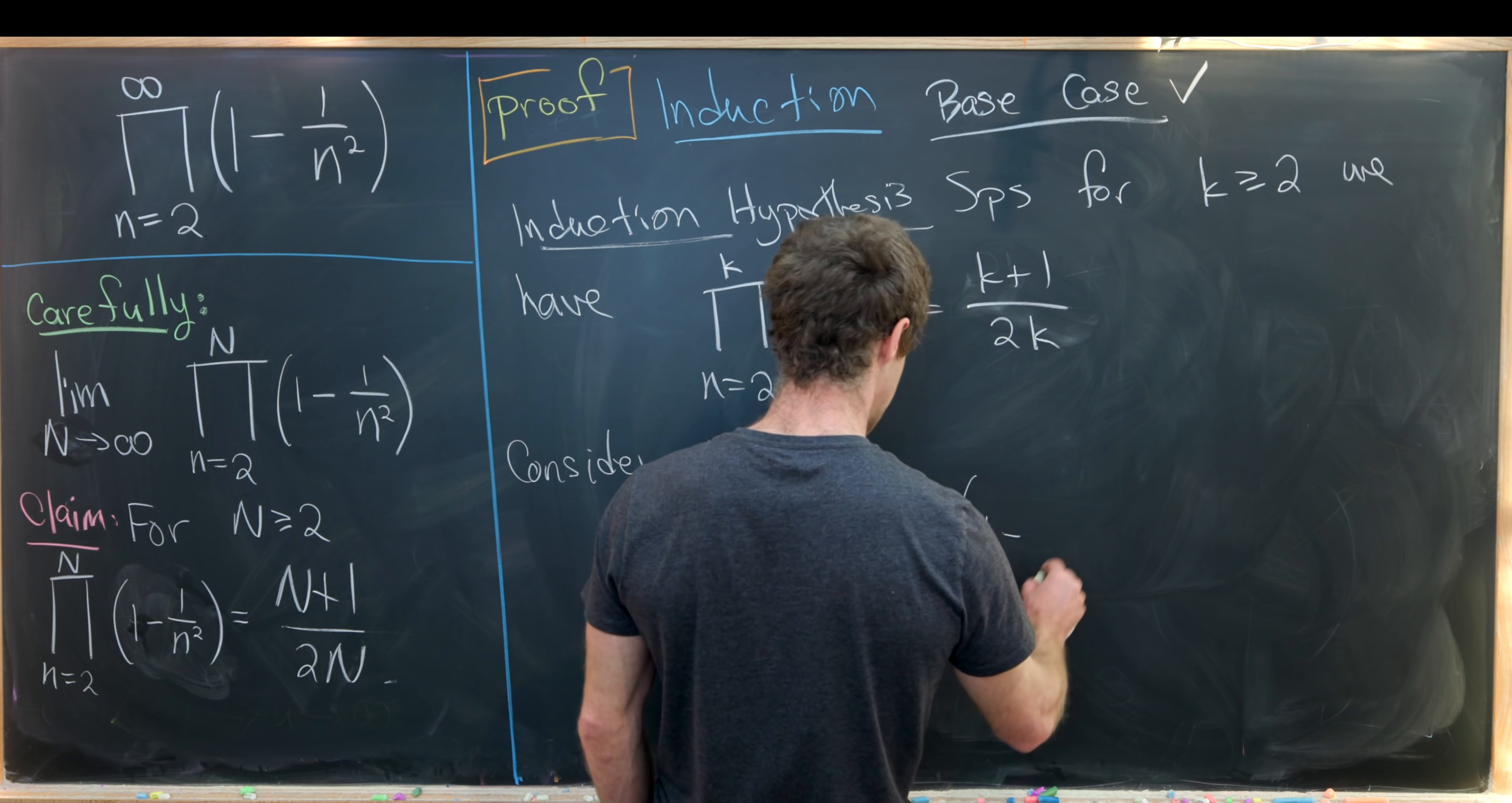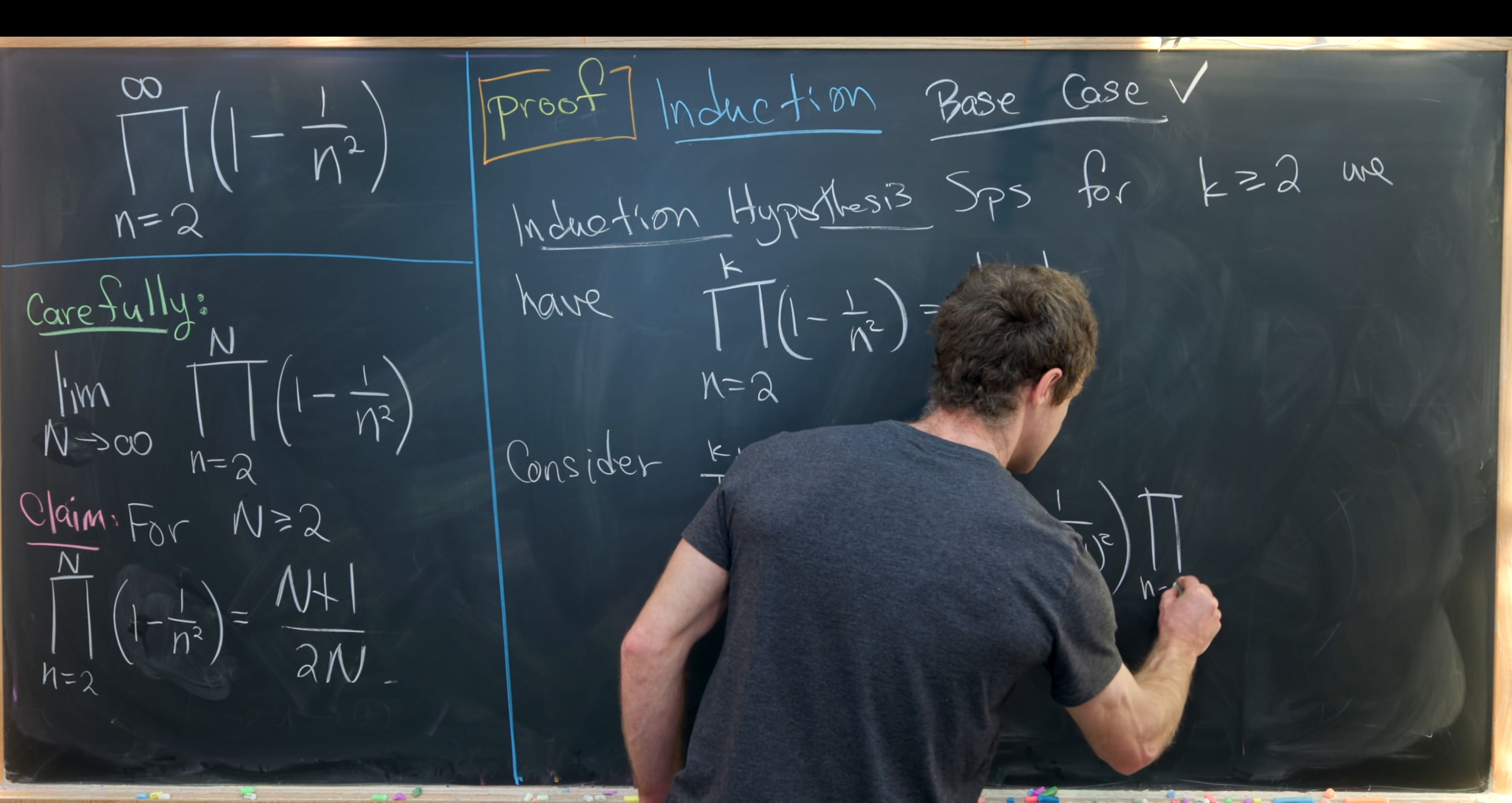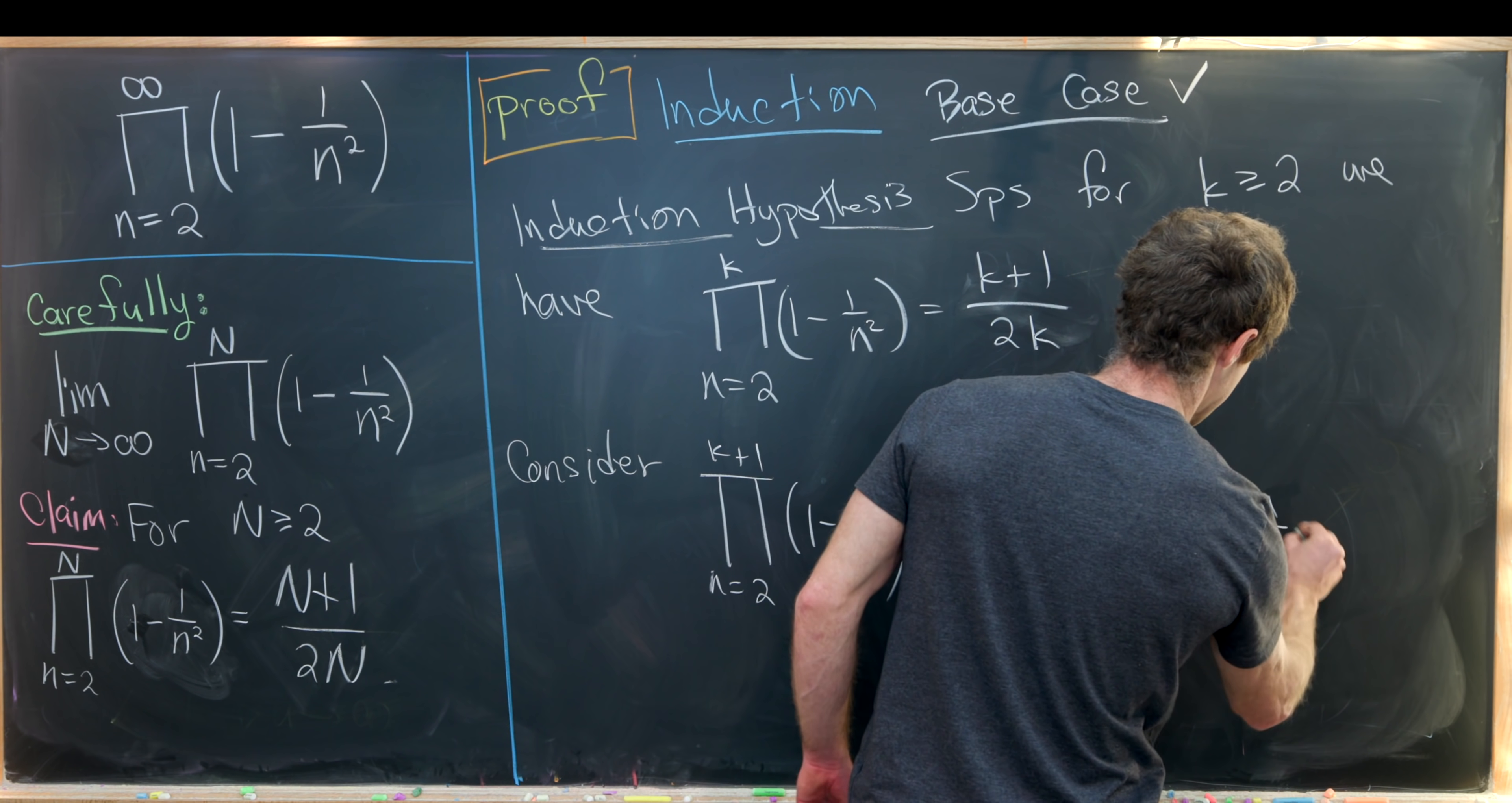So we'll take this and factor the last term out of it. So that'll be 1 minus 1 over k plus 1 quantity squared times the product as n goes from 2 up to k of 1 minus 1 over k squared.